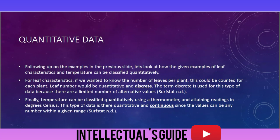Quantitative data: following up on the examples in the previous slide, let's look at how the given examples of leaf characteristics and temperature can be classified quantitatively. For leaf characteristics, if we wanted to know the number of leaves per plant, this would be counted for each plant. Leaf number would be quantitative and discrete.